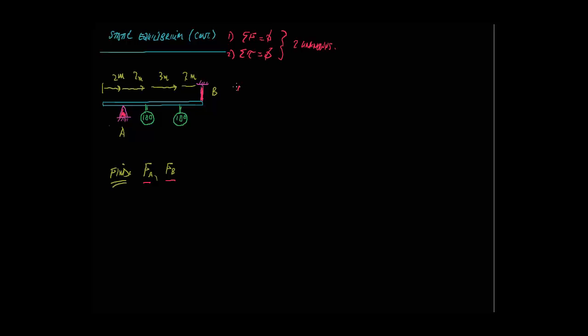So let's start out with the first one. We're going to sum forces in the y direction equal to zero. We'll call positive up. The reason we don't sum forces in the x direction, there's nothing happening horizontally. It's all vertical. All right. So what do we have?